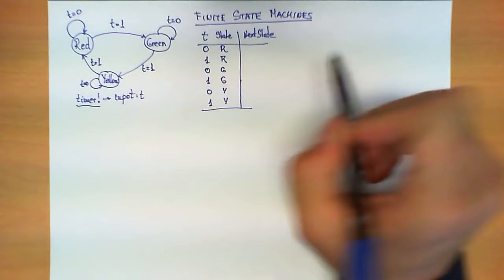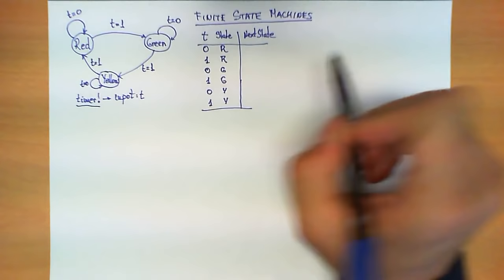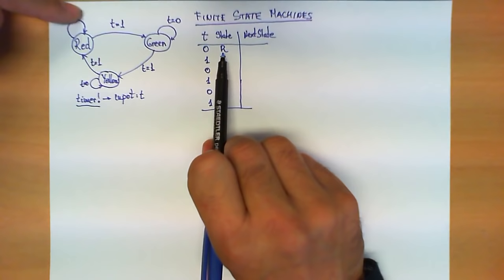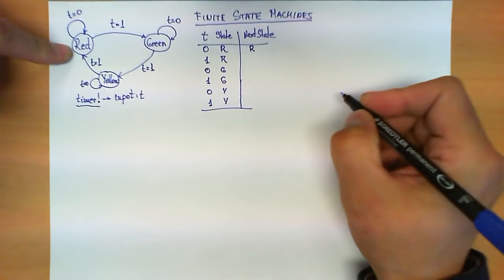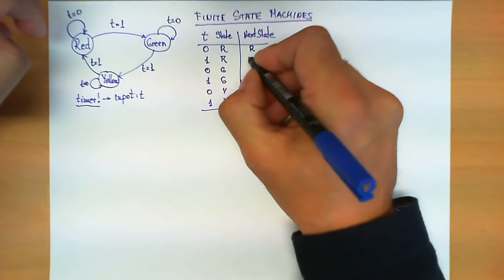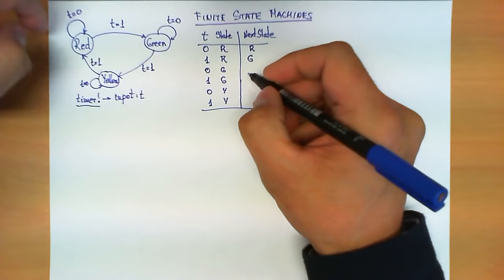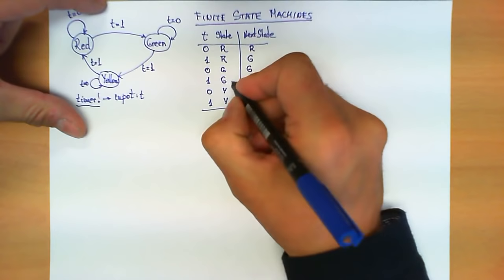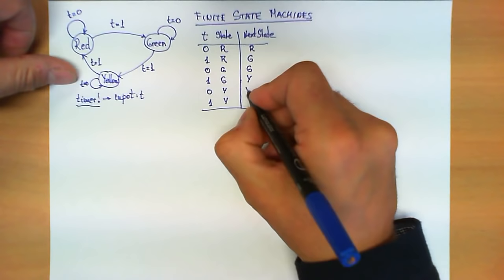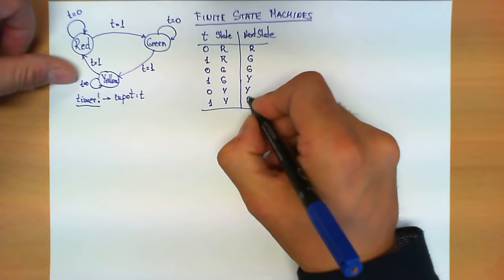We can write the next state for each of the combinations. If T equals 0 and I am at a red state, the next state is that the light remains red. However, when I am in the red state and T equals 1, the transition is done to the green state. If T equals 0 and we are in the green state, we remain in green. If T is 1, we make a transition to the yellow state. If we are in the yellow state and T equals 0, we remain in yellow. And whenever T equals 1 and we are in the yellow state, we make a transition to the red state.